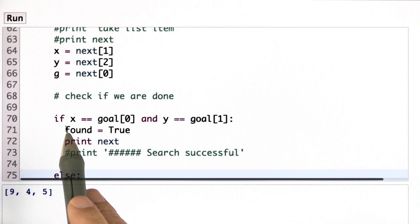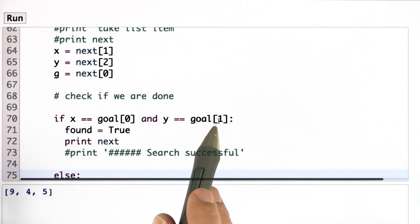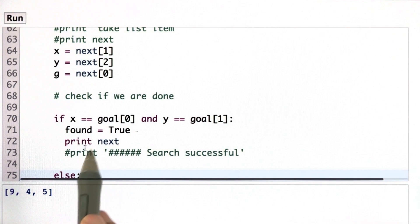And now I'm in the position to test whether I've reached the goal. So if x is the goal 0 and y is the goal 1, I'm done. I call found equals true. I print out this triplet and that gives me the triplet over here. So this print next over here is this triplet. And that's the one I was looking for asking you about printing exactly the solution over here.